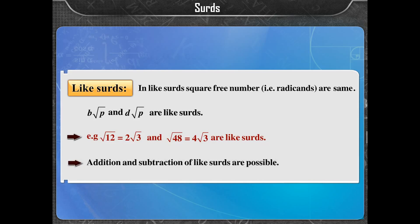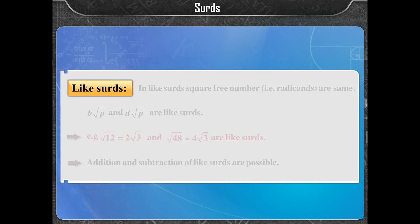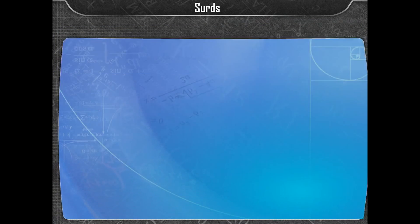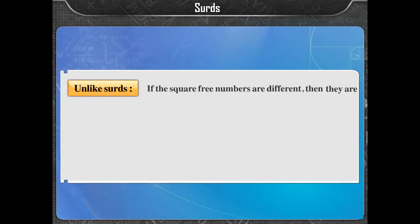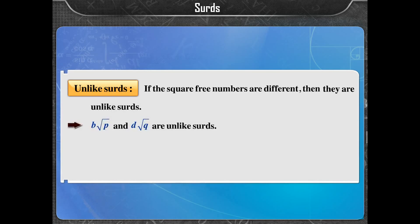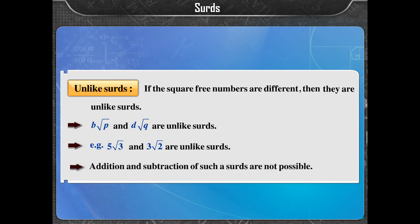Addition and subtraction of like SIRDS are possible. If the square-free numbers are different, then they are unlike SIRDS. B times square root of P and D times square root of Q are unlike SIRDS. For example, 5 times square root of 3 and 3 times square root of 2 are unlike SIRDS. Addition and subtraction of such SIRDS are not possible.